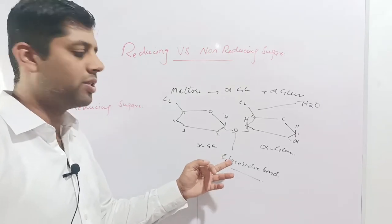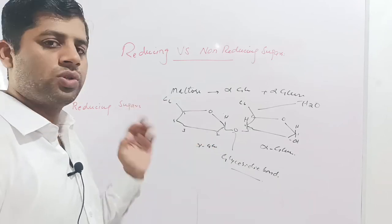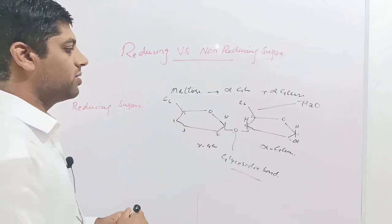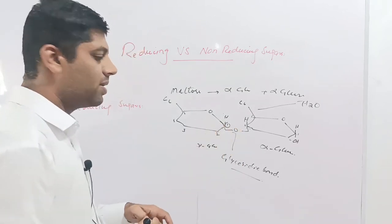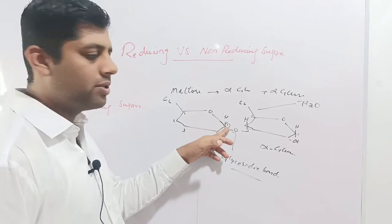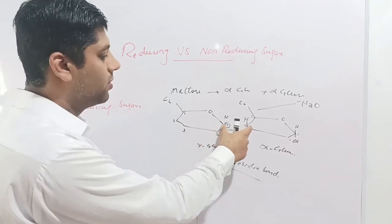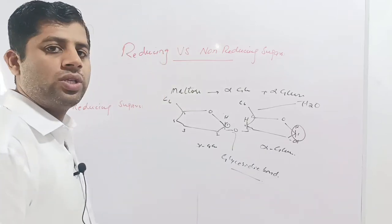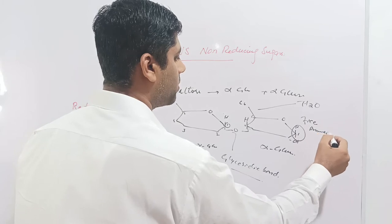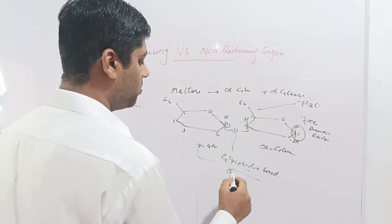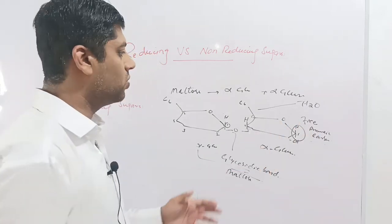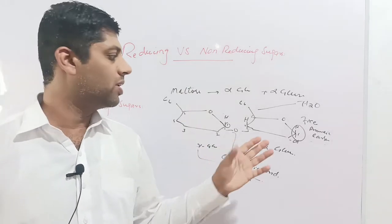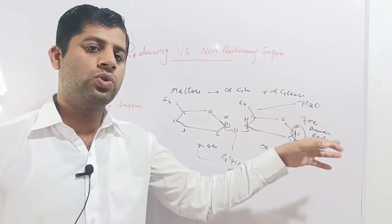Carbohydrates are joined together by glycosidic bonds. Now focusing on reducing sugars: reducing sugars are those in which there is an anomeric carbon that is free and can be oxidized. In maltose, the anomeric carbon of the first glucose is bound in the glycosidic bond and is not free. But in the second glucose molecule, the anomeric carbon is free and can be further oxidized, reducing other molecules. So maltose has one free anomeric carbon and serves as a reducing sugar. Reducing sugars have at least one free anomeric carbon that can be oxidized.